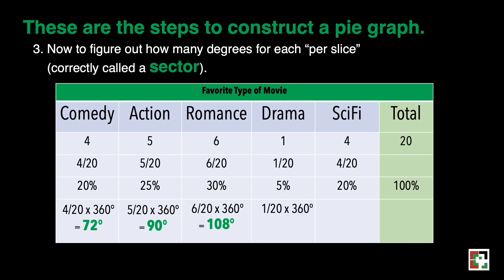For drama: 1 over 20 times 360 degrees gives 18 degrees, or 5% of 360 degrees equals 18 degrees. For sci-fi: 4 over 20 times 360 equals 72 degrees. We can also verify by adding: 72 plus 90 plus 108 plus 18 plus 72 degrees, which equals 360 degrees.